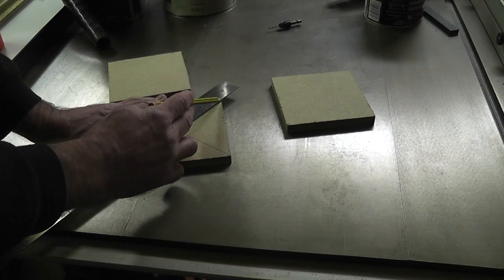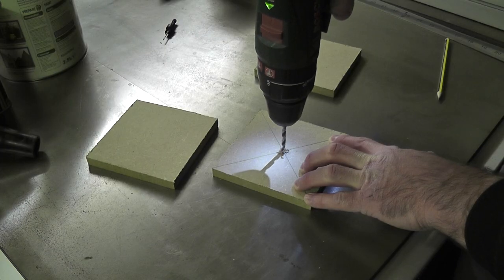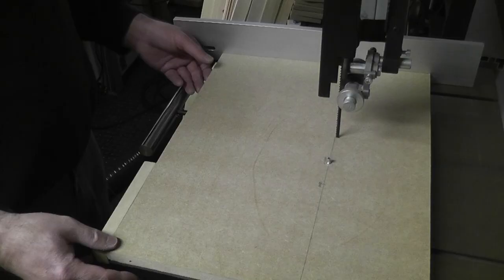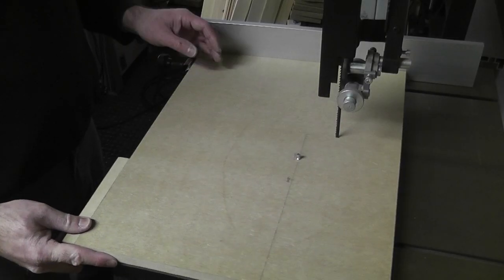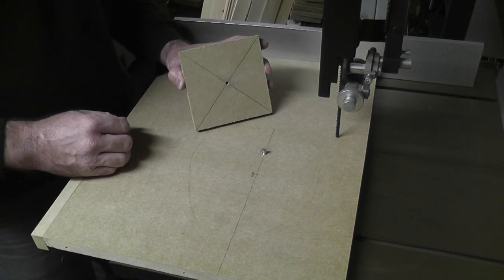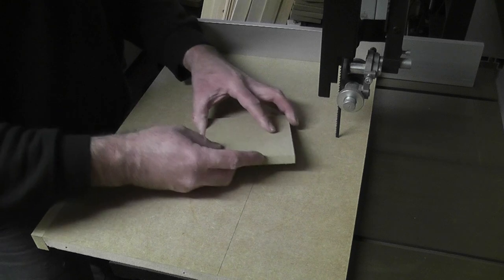Then it's just a case of marking and drilling the center of the piece that I need to cut, again making sure that I don't drill through the other side. Once it's placed on top of the pin, it's ready to be cut.